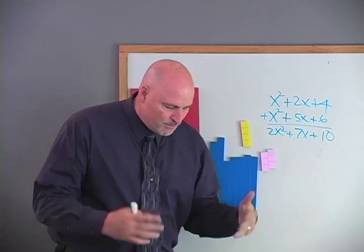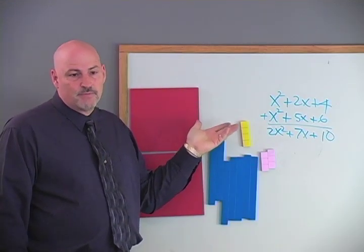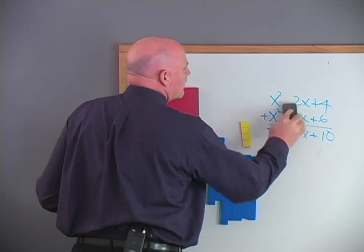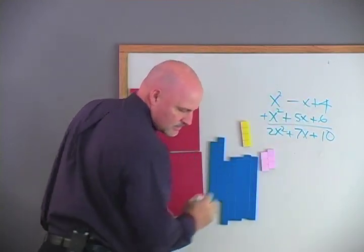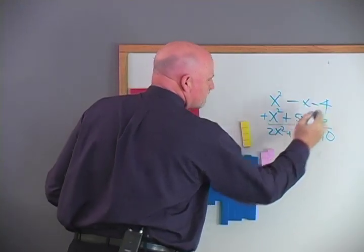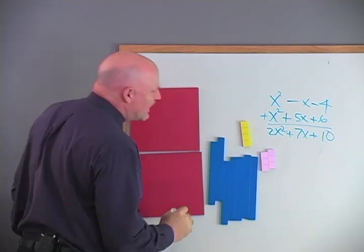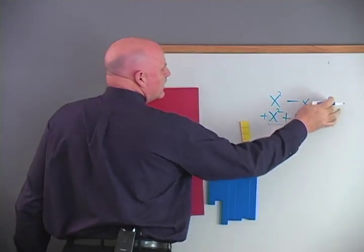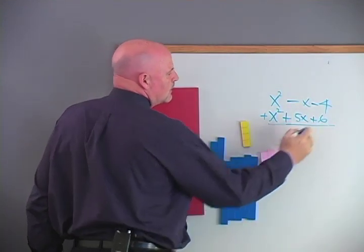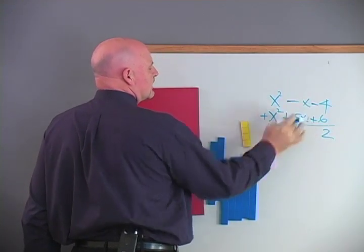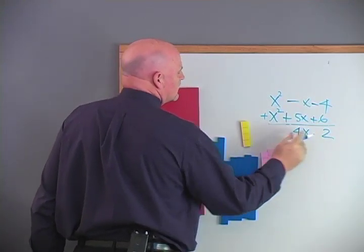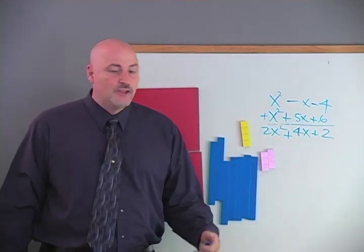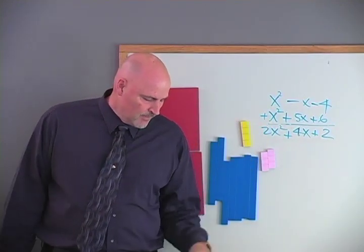So let's... In your book, if you have negatives, it's the same thing. If you had x squared minus x minus 4 and we'll have x squared plus 5x plus 6. What do we do here? Positive 6, negative 4. What's that? 2. Positive 5x, negative x. 4x. x squared plus x squared. Got it? And you can have negative numbers down here as well. It doesn't make any difference.